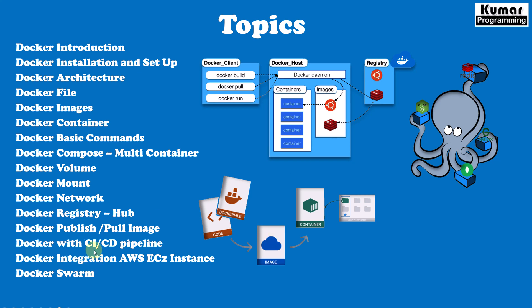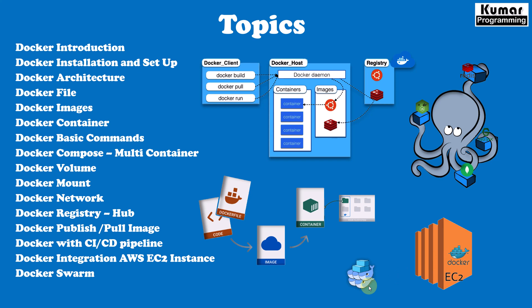After that, we will see how Docker can be integrated with our CI/CD pipeline. I'll take a couple of examples from Jenkins and GitHub Actions. And then after that, we are going to see the integration of Docker inside our EC2 instances. Last but not least, we are going to learn about Docker Swarm, where we will learn about how to create a master and worker node and how we can do the orchestration between worker and master node.